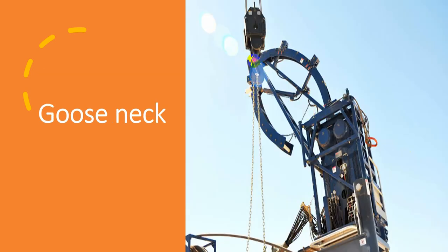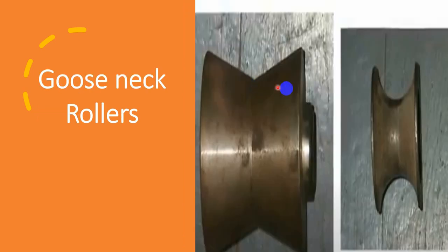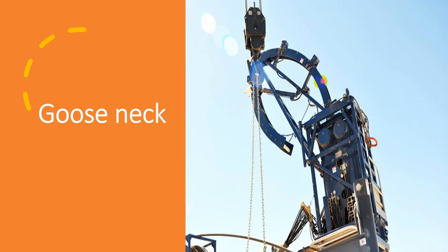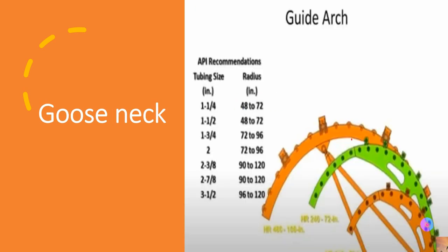This is the gooseneck in retracted position. If you want to extend it, you push hydraulic oil to this piston from the cabin, which pushes this part so it is extended. The radius of curvature of the gooseneck is determined by API recommendations — for a given tubing size, we have a range of gooseneck radii, as you can see from this slide.